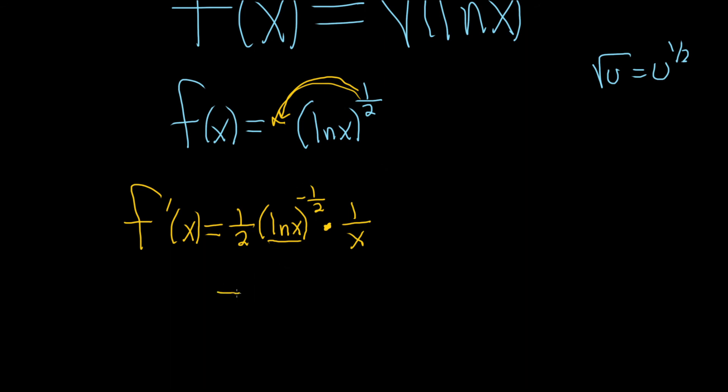Let's go ahead and clean this up. This is f prime of x. And I guess we can bring this downstairs and make it positive, so it'll look like this: 1 over 2, 1 over ln x to the 1 half, and then 1 over x.